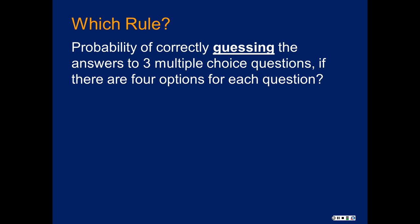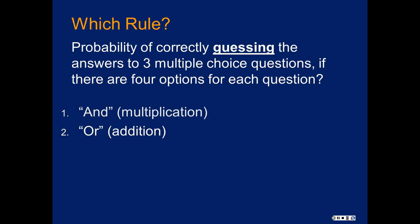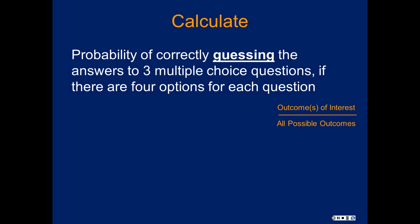What's the probability of correctly guessing the answers to three multiple choice questions if there are four options for each question? You would rephrase this with AND: the probability of guessing number one correctly AND guessing number two correctly AND guessing number three correctly. We can actually figure this one out — it's a pretty easy one. If there are four options for each question, then for each question the probability of guessing correctly is one in four.